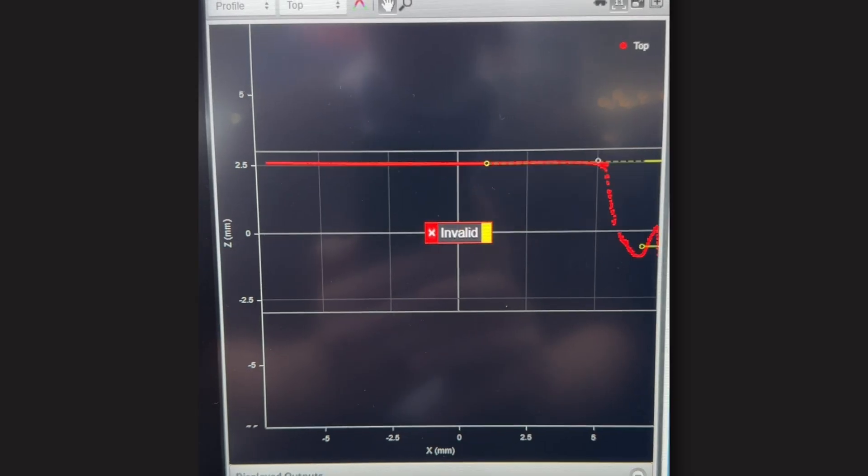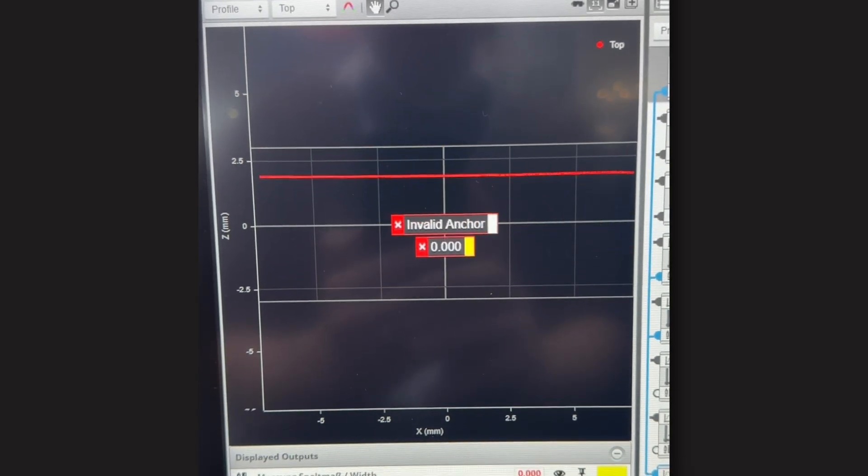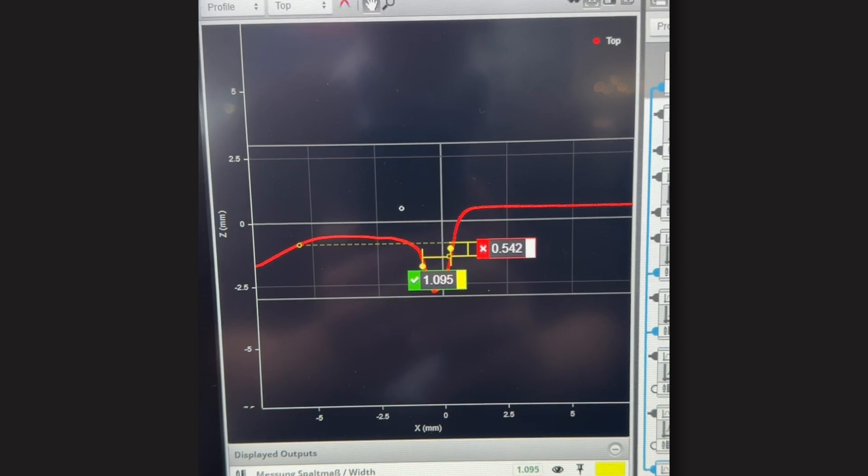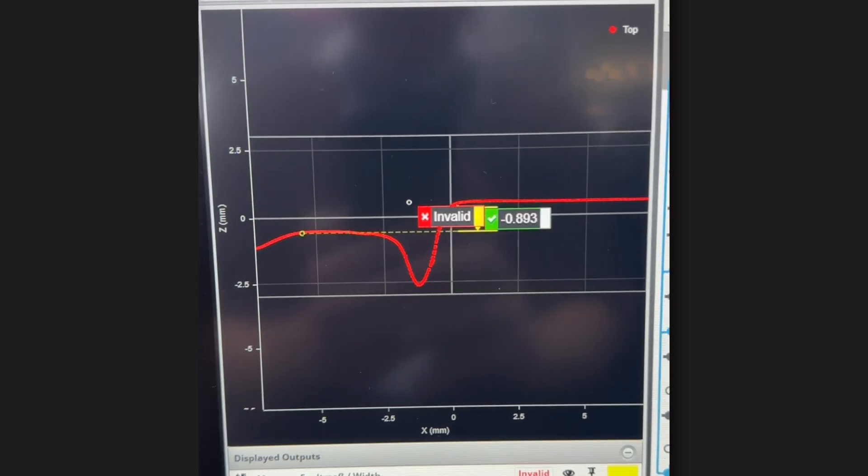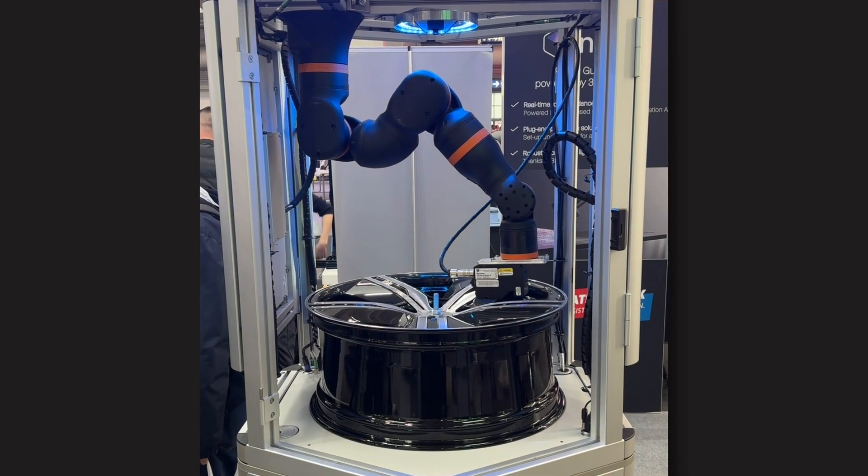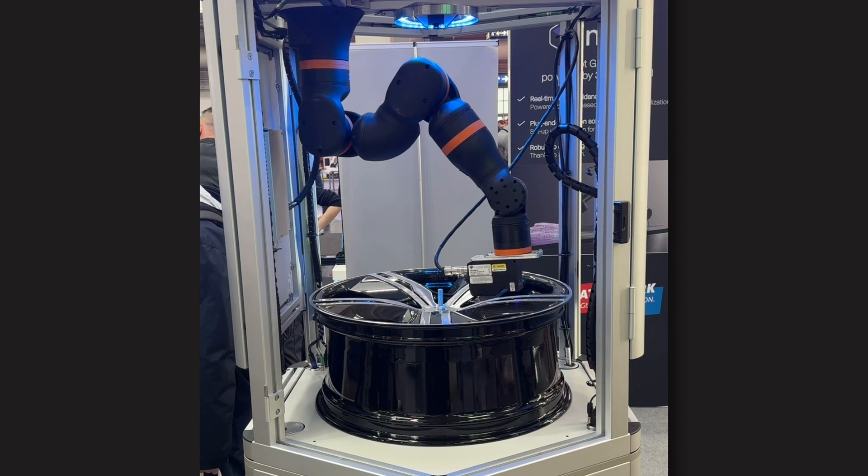We measure 60 points in accuracy of 10 microns. In one minute, we get the complete rim measurement. And it runs in line in the production with a 100% control.